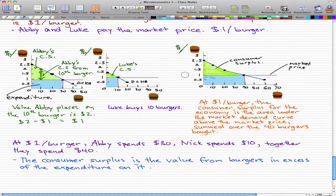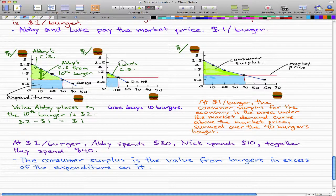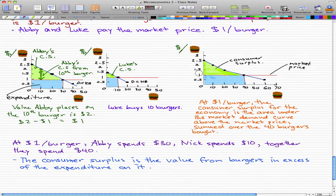I've labeled everything here, and we know how to get the market demand curve that is pretty much the sum of the individual demand curves, which is Abby's curve and Luke's curve. Everything below the market demand curve and above the market price is the consumer surplus for the entire market.